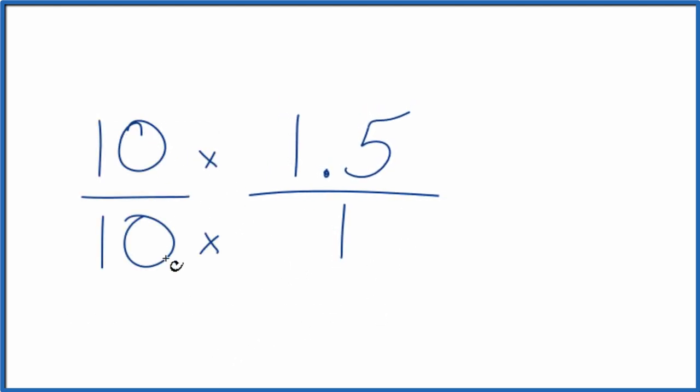That's because 10 over 10 is just 1. So we're multiplying this by 1. We don't change anything, just the way it's represented. 10 times 1.5 gives us that 15. There's our whole number. And 10 times 1, that's 10.